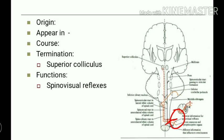Regarding the course of the spinotectal tract: second order neuron fibers cross the midline and pass through the anterior white commissure to reach the lateral white funiculus of the opposite side. These fibers ascend with the anterior spinothalamic tract and end in the superior colliculus of the midbrain — hence the name spinotectal, from spinal cord to the midbrain tectum. The function of these fibers is concerned with spinovisual reflexes.